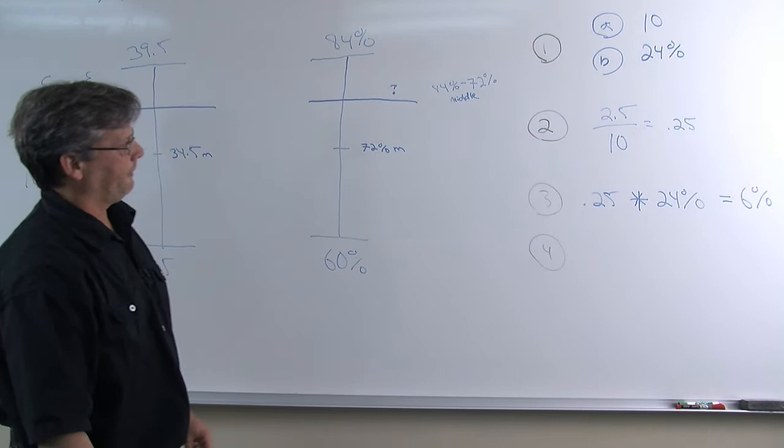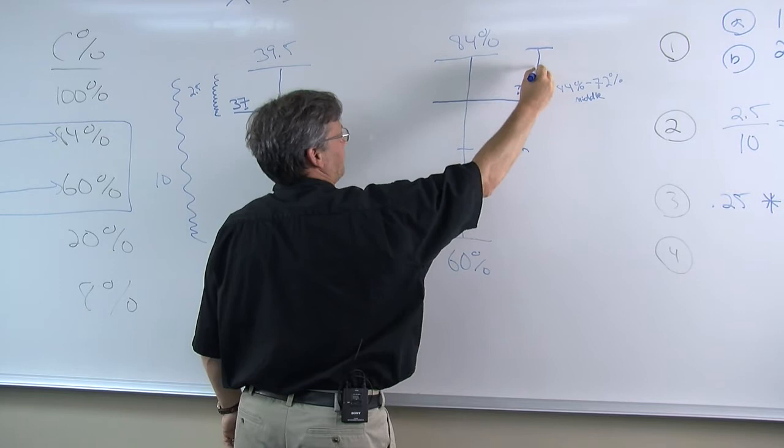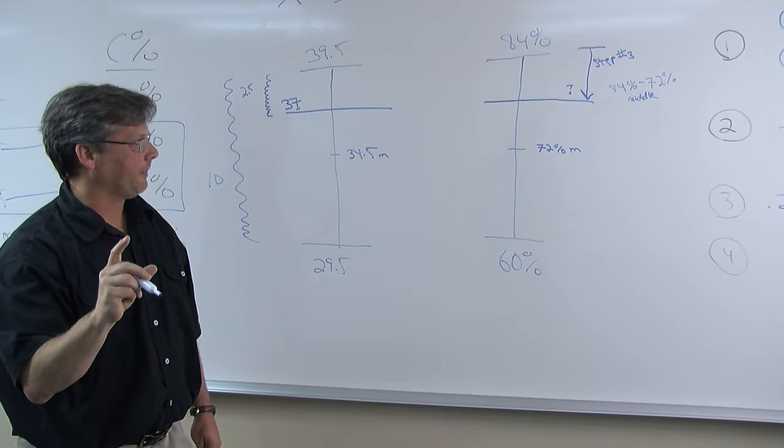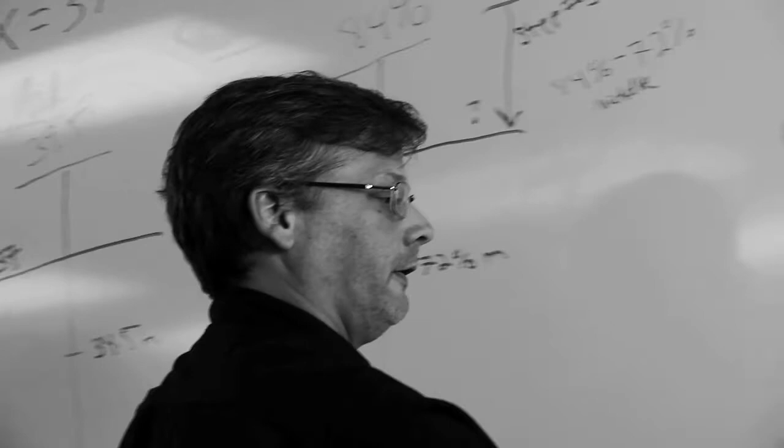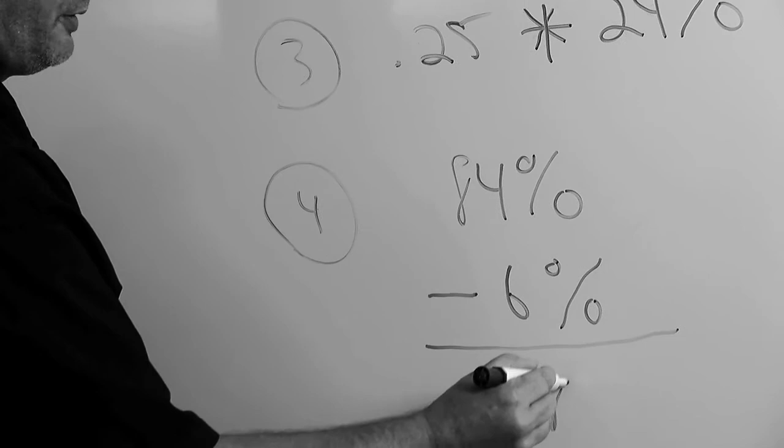And before we finish up and get our step 4 answer, I'd like to remind you of what step 3 does for us every time. Step 3 can be visualized. Step 3 always gives us the distance between the top of our second scale and our final answer. That's why once we get step 3, we use subtraction. We take the top of the second interval, 84%, subtract our step 3 value consistent with the down arrow visual, and get our final answer of 78%.